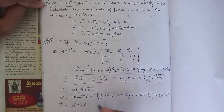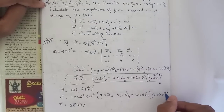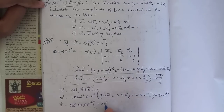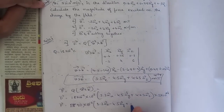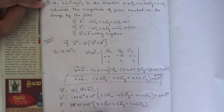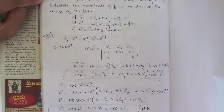So F = 90 × 10^-9 × 10^-3 × 5×10^6 × (3.3ax - 4.5ay + 4.65az). The powers combine: 10^(-9-3+6) = 10^-6. Multiplying: 90×10^-6 × (3.3ax - 4.5ay + 4.65az) gives approximately F = 297ax - 405ay + 418.5az micronewtons.